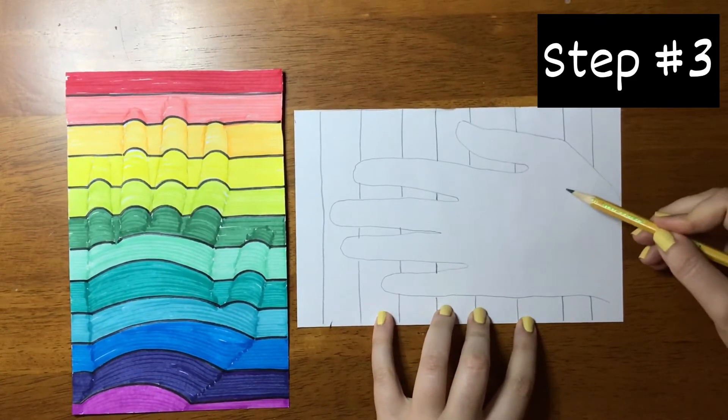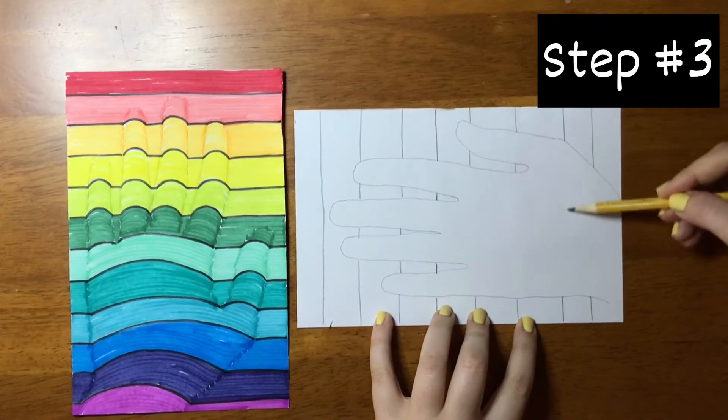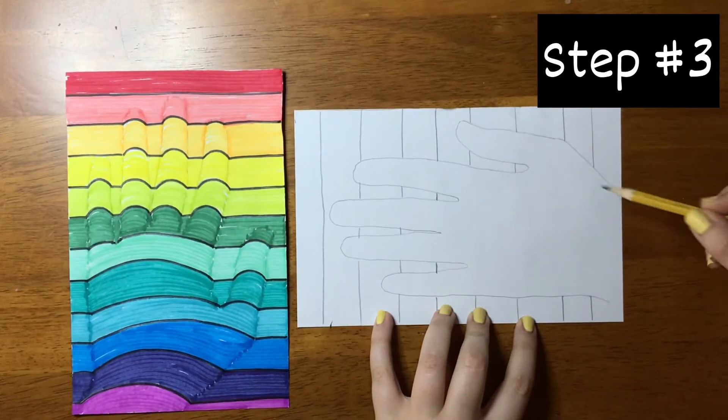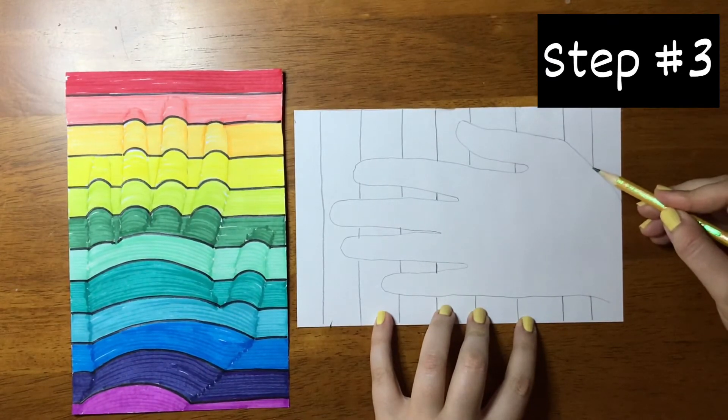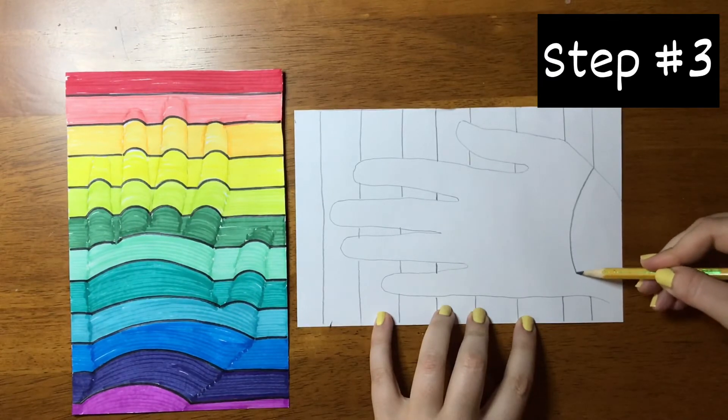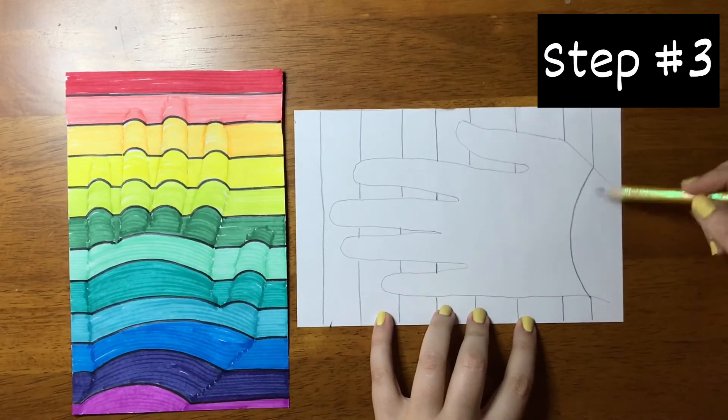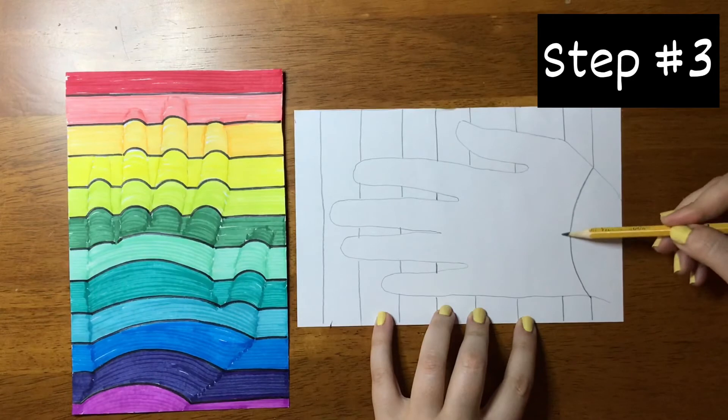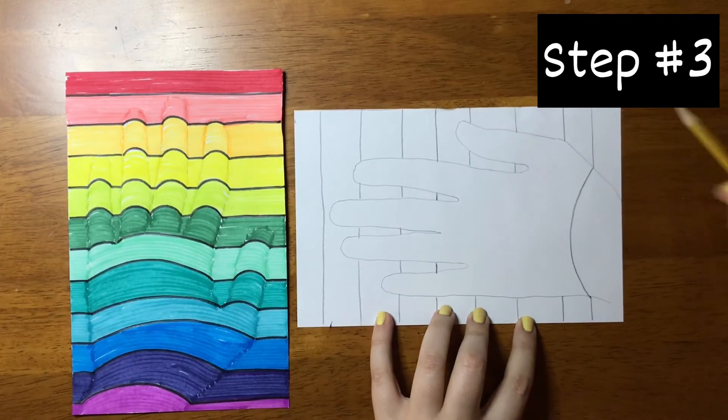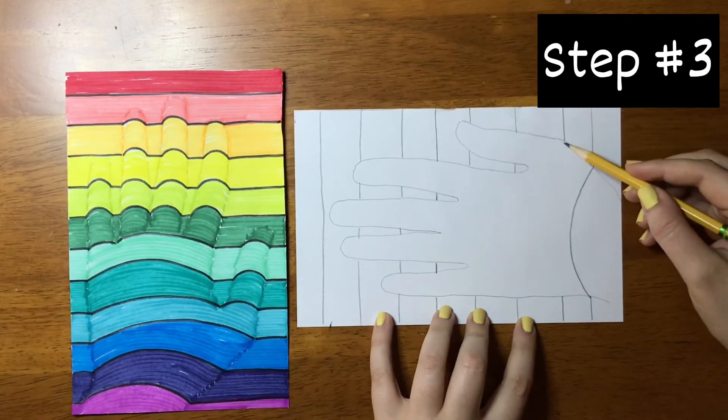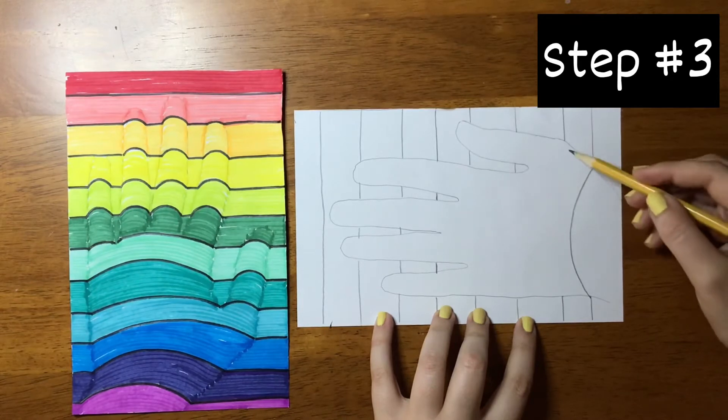We don't want to go too tall because we don't want it to pass this imaginary line right here. So we're going to start here, bump, and down. We're not passing this imaginary line. And we're going to do that for the rest of the hand.